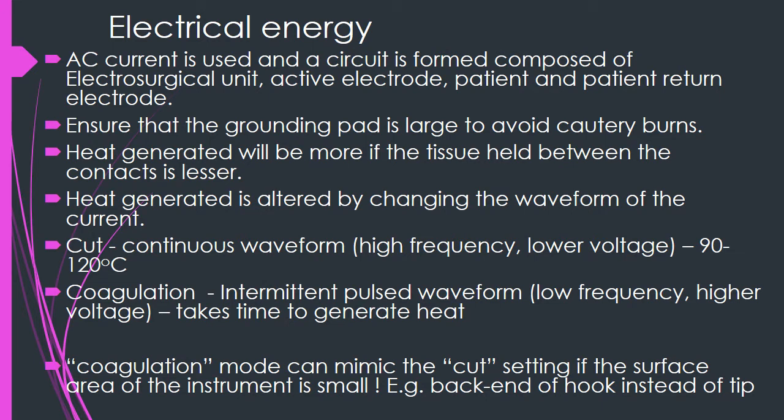Alternating current is used when electrical energy is deployed for hemostasis. The circuit is formed when the electrosurgical unit (ESU) delivers current to the active electrode. The current reaches the patient and returns to the ESU via the indifferent electrode. One should ensure that the grounding pad is very large to avoid cautery burns, because the energy can dissipate over a large surface area. If the tissue held between the two contacts is very large, the heat generated will be less. Therefore, you can alter the heat generated by changing the waveform of the current or the amount of tissue being held.